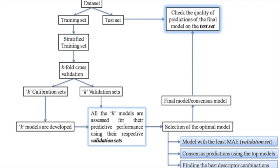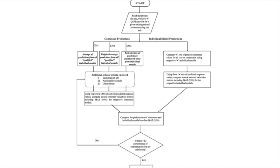The dataset given should be divided into training and test sets. In addition, the training set can be stratified into k number of calibration sets and k variation sets, from which k models can be developed and their quality of predictions tested on the corresponding variation sets. The best model can be chosen based on the performance on the variation sets. One can also go for consensus predictions, which are more reliable than predictions from individual models.